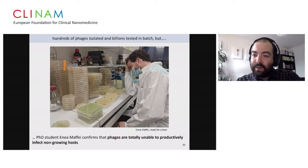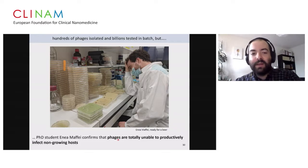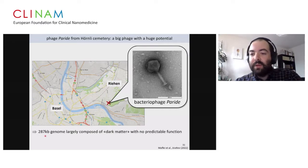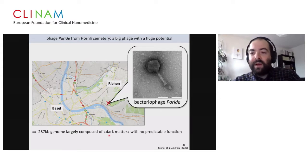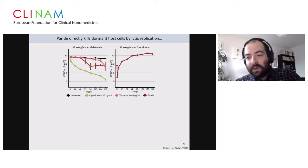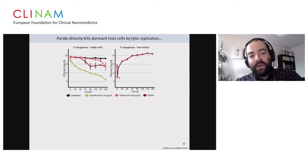A PhD student in my group, India Maffei, was sampling many phages from natural samples and never found any phage that could replicate on dormant host cells — until one day we took a sample from a pile of rotting plants behind the Hernery Cemetery in Basel. There we found one phage we call Paridae. Paridae is a huge phage with almost 300 kilobase genome — nine to ten times the size of SARS-CoV-2 — and this genome is largely composed of so-called dark matter: genes with no obvious predictable function.